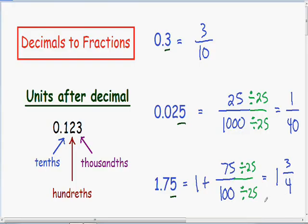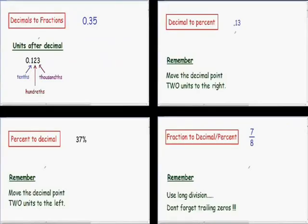So the decimal 1.75 written as a fraction is 1 and 3 fourths. Here are some more videos with more example problems related to the video you just watched. I really hope you are finding my tutorials helpful. Until my next video, I will see you later.